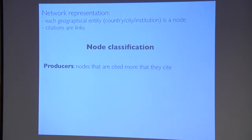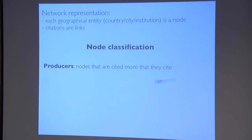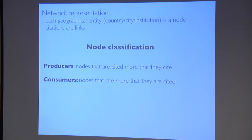Using the economical analogy helps us classify nodes into two types. There are the producers: cities, institutions, or countries that export more knowledge than they import — they are cited more than they cite, so they produce a net amount of knowledge. The consumers, vice versa, are nodes — countries, institutions, or cities — that import more knowledge than they export.